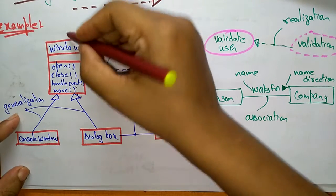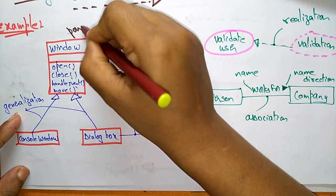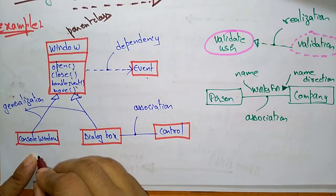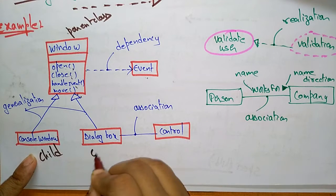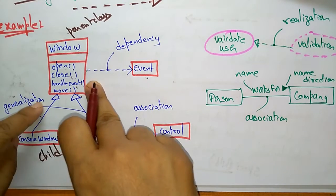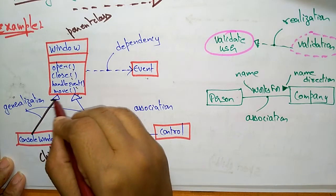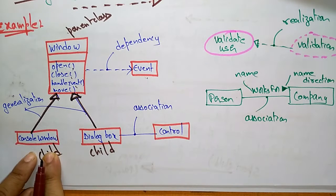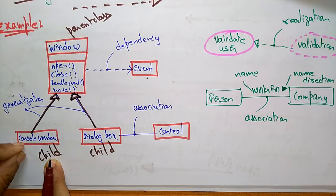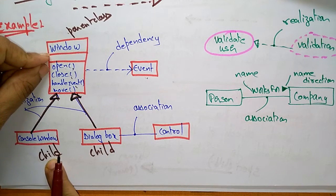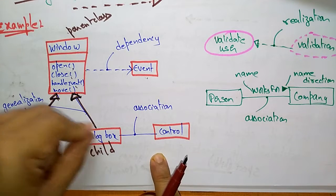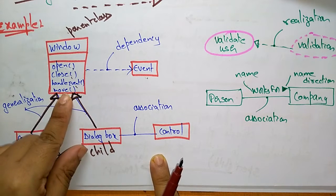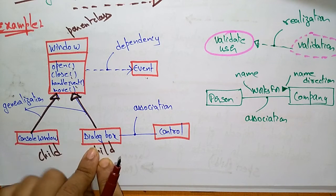The Window class is the base class — the parent class. ConsoleWindow and DialogBox are the child classes, connected to Window using the generalization symbol. A ConsoleWindow object is substitutable in the parent class, and the DialogBox object is also substitutable in the parent class.